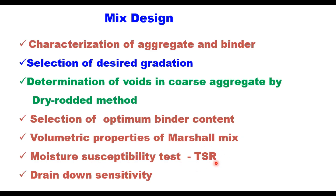Moisture susceptibility test in the form of tensile strength ratio is carried out, as done for BC layer. One additional test is drain down sensitivity. Because SMA mixes have a high asphalt content, as the mix sits in the HMA storage silo, transport trucks, and after it is placed, the asphalt binder has a tendency to drain off the aggregate and down to the bottom. This phenomenon is called drain down, and it should not exceed 0.3% by weight of the mixture.